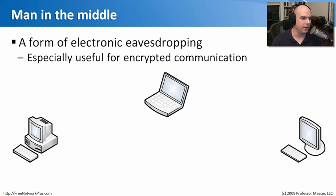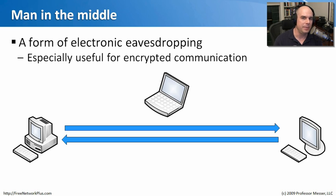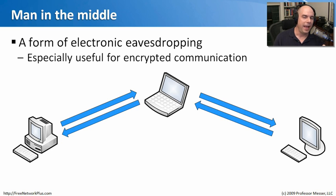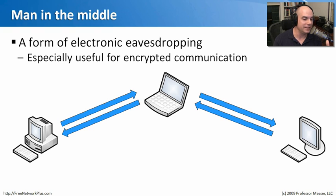Another way bad guys eavesdrop on the network is a man-in-the-middle attack. Normally two stations communicate, sending public keys and encrypted messages to each other in a private exchange. If someone sits in the middle, retrieves the keys being sent, and substitutes their own key, they can now decrypt all communication in the middle, re-encrypt it, and send it on its way — examining everything sent back and forth. It doesn't scale well, but if you find the right conversation, you can gather a lot of interesting information.